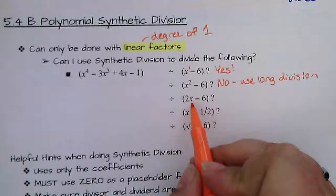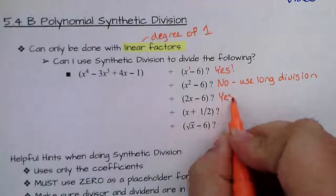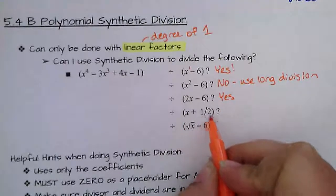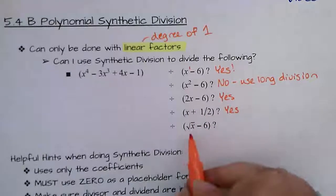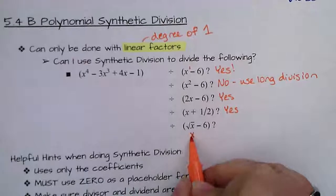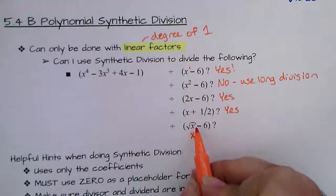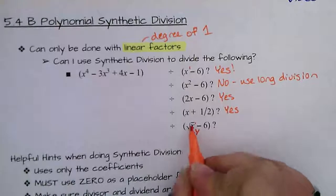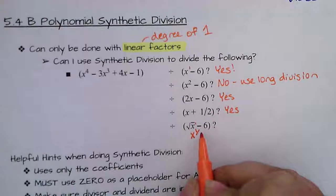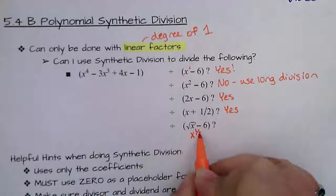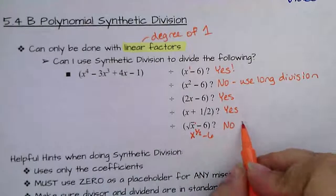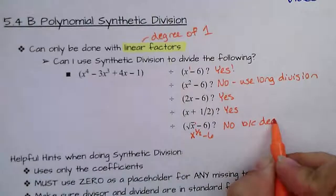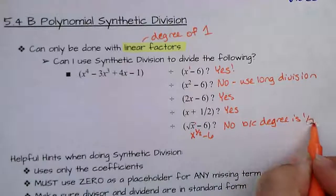What about a fractional coefficient divisor? The degree is still 1, so yes, we can use synthetic division there. But if you have a radical, whatever's in the index becomes the denominator of the exponent. So something like the square root of x minus 6 is actually x to the one-half minus 6, making the degree one-half. You cannot use synthetic division with radicals or degrees other than 1.